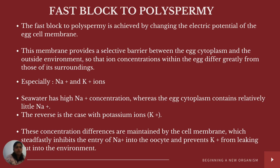The fast block to polyspermy is achieved by changing the electric potential of the egg cell membrane. This membrane provides a selective barrier between the egg cytoplasm and the outside environment so that ion concentrations within the egg differ greatly from its surroundings, especially Na⁺ and K⁺ ions. Sea water has high concentrations of Na⁺ ions whereas the egg cytoplasm contains relatively little Na⁺, and the reverse is true for potassium ions. These concentration differences are maintained by the cell membrane, which inhibits the entry of Na⁺ and prevents K⁺ from leaking out.